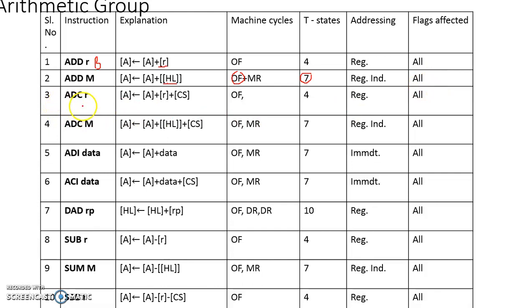Another addition instruction is ADC R — for example ADC B, ADC D, ADC E, or even ADC A. This asks the microprocessor to add the content of the accumulator with the content of the register whose symbol is mentioned, along with the content of the carry status flag generated by the immediately preceding instruction, and place the result in the accumulator register.